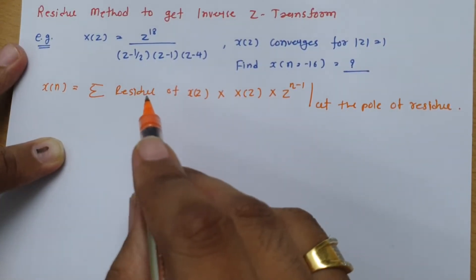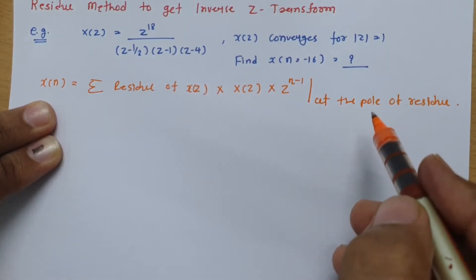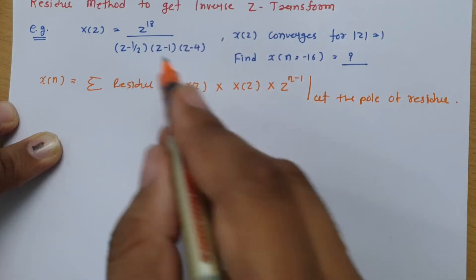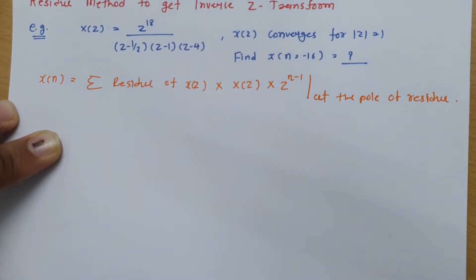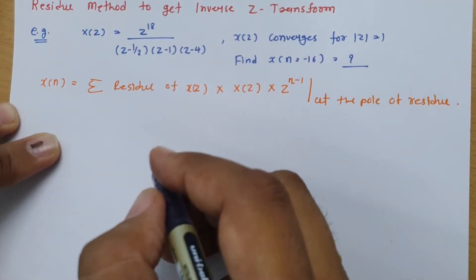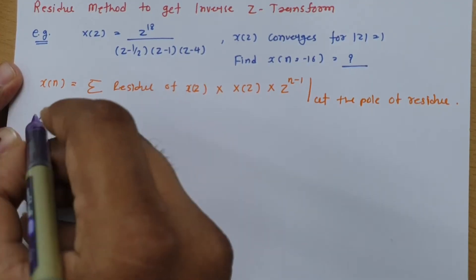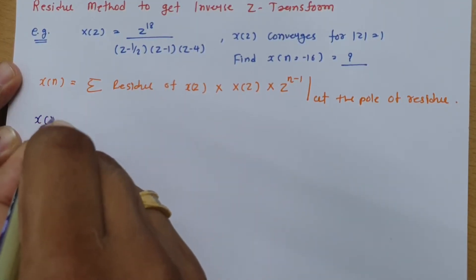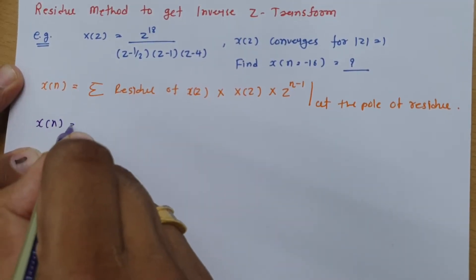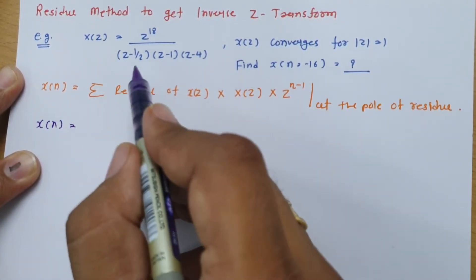When you see this formula at first it may seem difficult to understand, but I'll explain it through this example so it will be more clear. Let us apply this formula for this case. We are calculating X of N. We have three poles in X of Z, so we will have three residues.